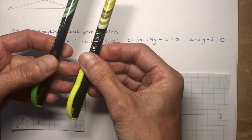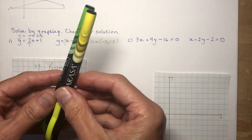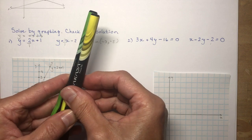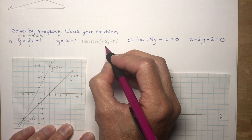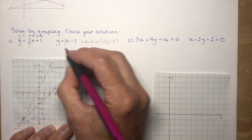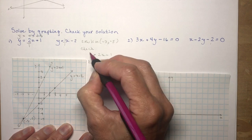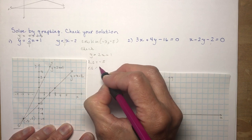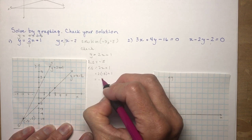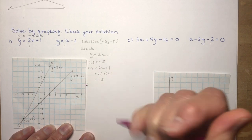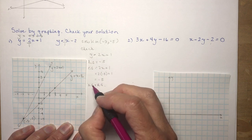Lines can intersect in one point, or if they're parallel there's no solution, and we'll talk about this again. The other option is they're the very same line, so there's an infinite number of intersection points. Back to checking: for equation one, y = 2x + 1. Left side equals y = −5. Right side equals 2(−3) + 1, which gives −5. Left side equals right side.